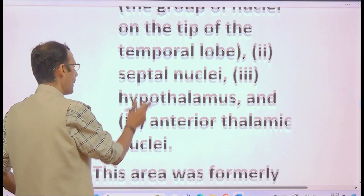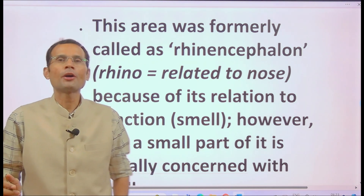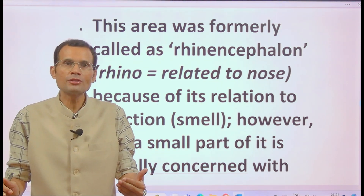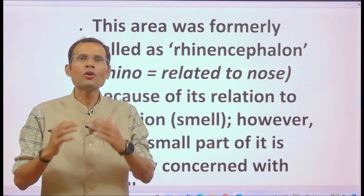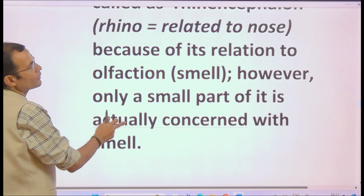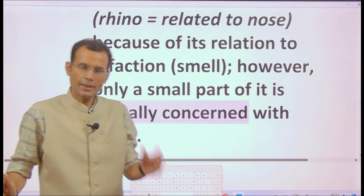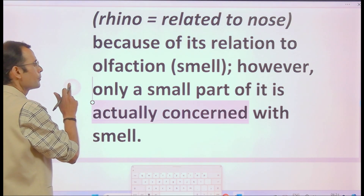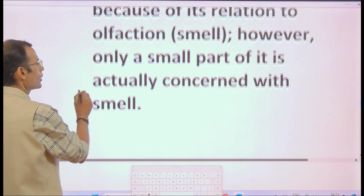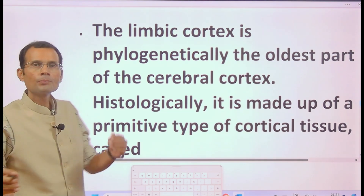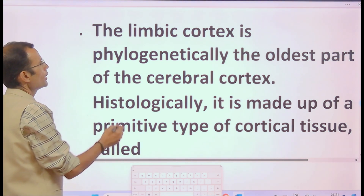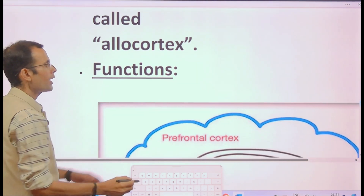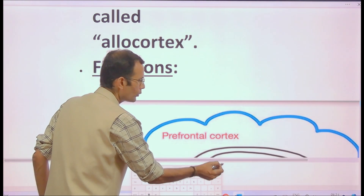An additional point: the limbic system was formerly called the rhinencephalon — 'rhinos' meaning nose — because of its close relation to olfaction. However, olfaction is only a small part of limbic system function. The limbic cortex is phylogenetically the oldest part of the cerebral cortex, referred to as the allocortex.